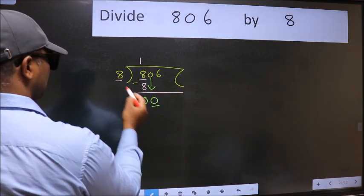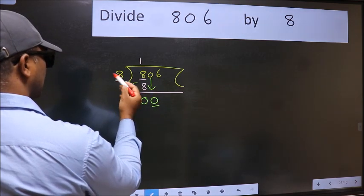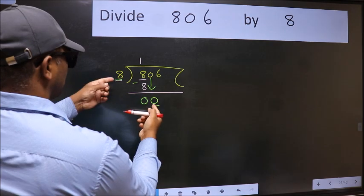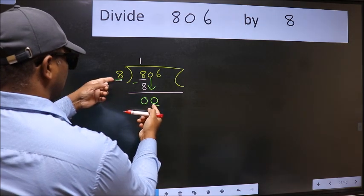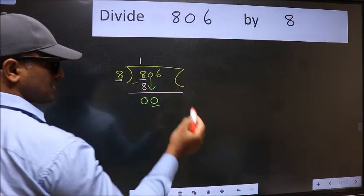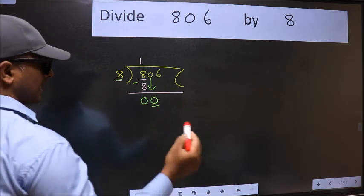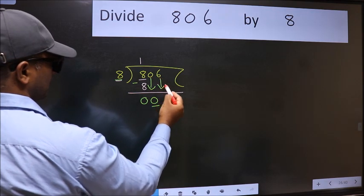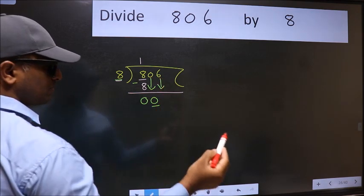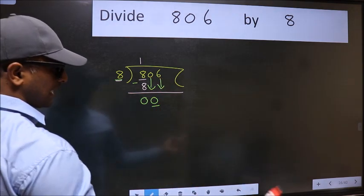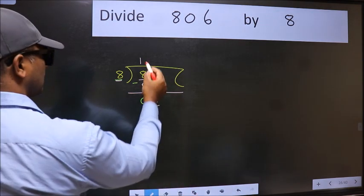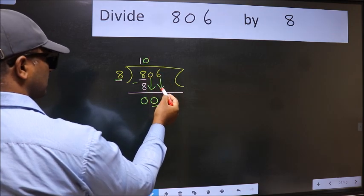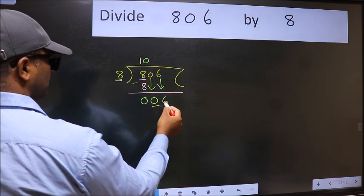Here we have 0 and here 8. 0 is smaller than 8, so we should bring down the second number. And the rule to bring down the second number is to put 0 here — then only we can bring this number down.